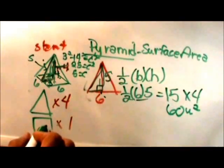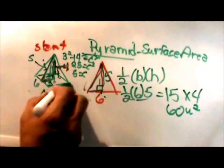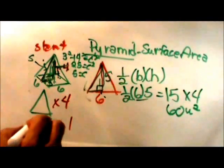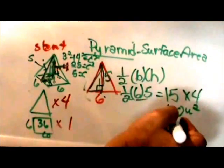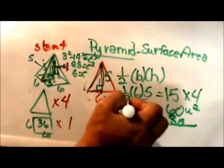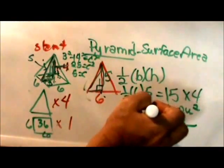Now I am going to add one base. The base remember is a square that is six by six or thirty six square units. So I am going to add thirty six to that and add those together and that gives me ninety six square units.